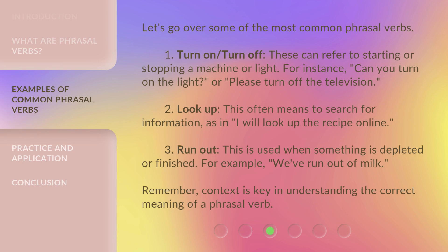Let's go over some of the most common phrasal verbs. 1. Turn on / Turn off — these can refer to starting or stopping a machine or light. For instance: 'Can you turn on the light?' or 'Please turn off the television.' 2. Look up — this often means to search for information, as in 'I will look up the recipe online.' 3. Run out — this is used when something is depleted or finished. For example: 'We've run out of milk.' Remember, context is key in understanding the correct meaning of a phrasal verb.